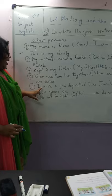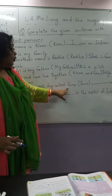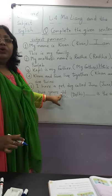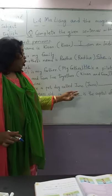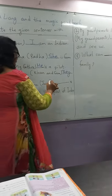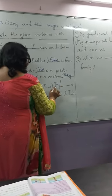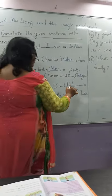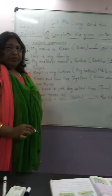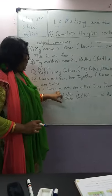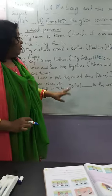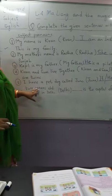Number 5: I have a pet dog called Juno. Juno dash is 2 years old. So here we are talking about Juno. Which pronoun will you use here? It. If Juno is a male dog, then you can also use 'he.' It is 2 years old, or you can also say he is 2 years old.